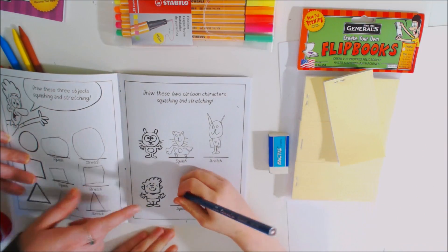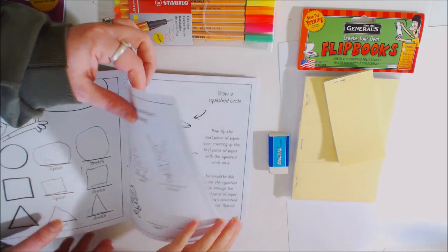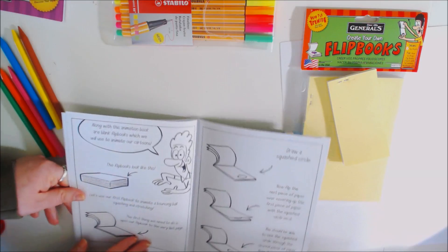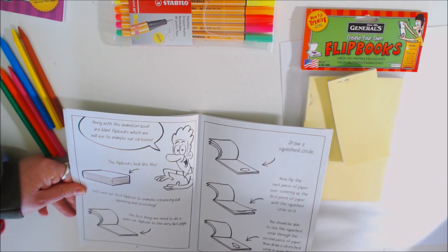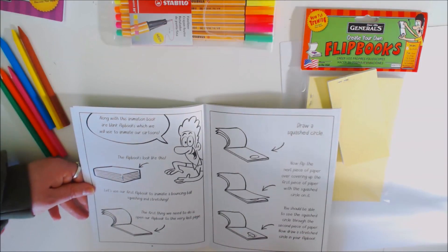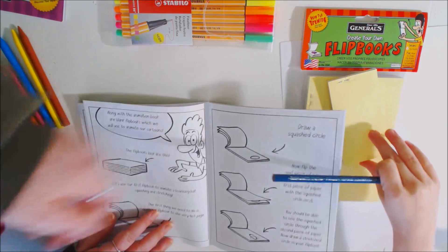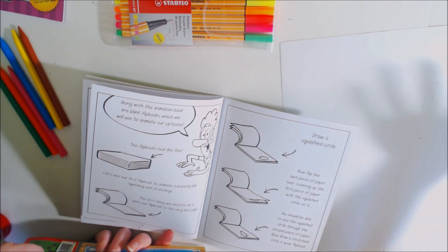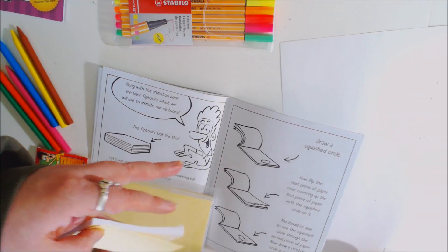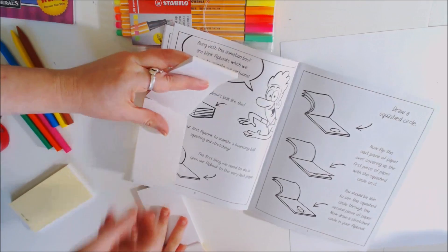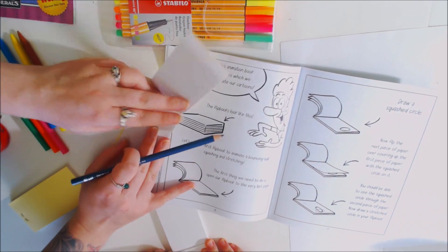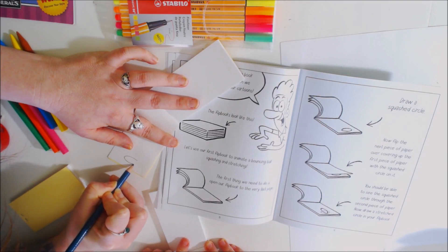There you go. Good job. You don't have to do this one. You got the idea. You can do that one later. All right, so now we're going to start learning how to do it in our flip books. Can you start reading along with this? Animation flipbooks, which we will use to animate our cartoons. The flip books look like this. The first thing we need to do is open our flip book to the very last page. So we actually have seven of these because six came in this and one came in the kit. So you and your brother and sister will each have two from here and I'll get this one. Does that sound cool?